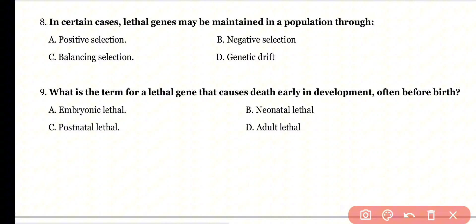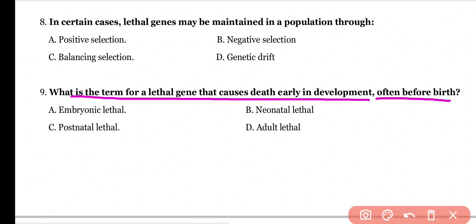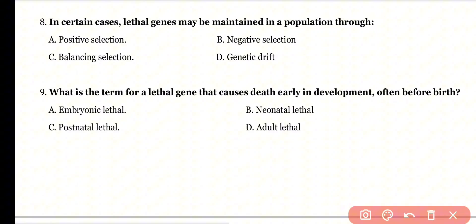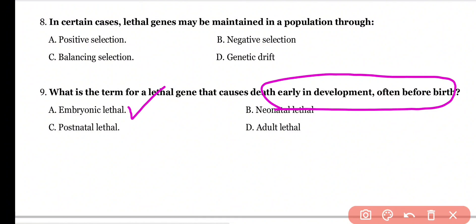Question 9: What is the term for a lethal gene that causes death early in development, often before birth? Options: embryonic lethal genes, neonatal lethal, postnatal lethal, or adult lethal? Correct answer is option A. Embryonic lethal genes are responsible for death in early development, before birth.